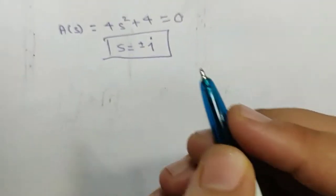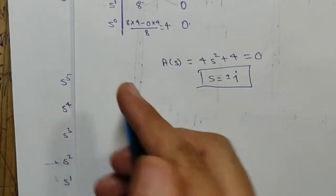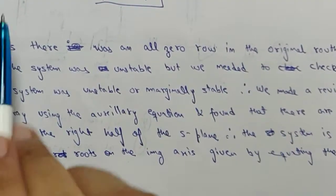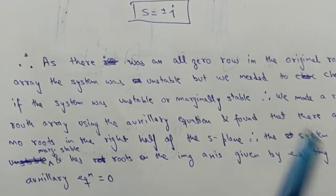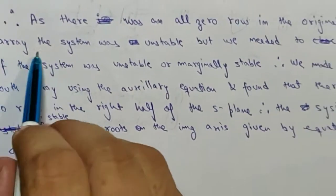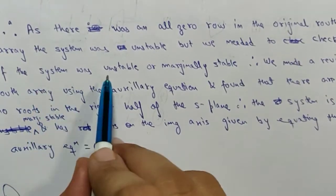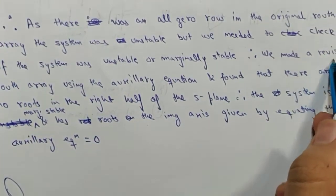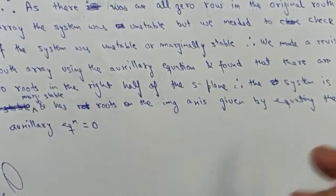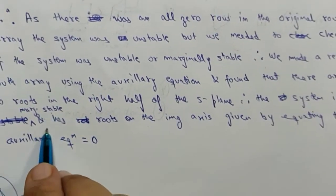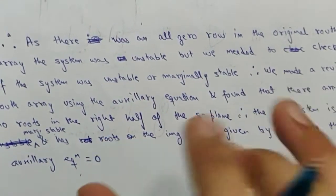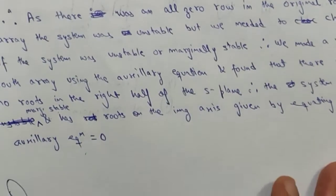In conclusion: as there was an all-zero row in the original Routh array, the system was unstable. We made a revised Routh array using the auxiliary equation and found no roots in the right half of the s-plane — the first column is all positive. Therefore the system is marginally stable with roots on the imaginary axis given by equating the auxiliary equation to zero.